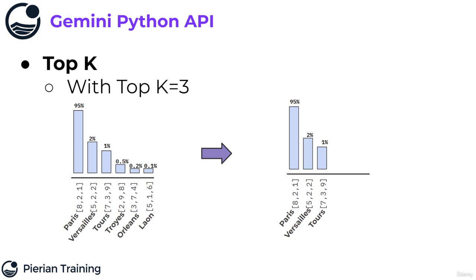For example, if we asked the model for the capital of Paris and in this example we have six results, if I set K equal to 3, then I'm only going to consider the top three most probable results before I actually conduct my sampling. Notice that in either situation, Paris is still the most probable token to be picked.